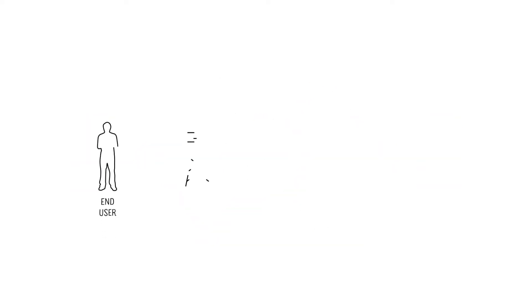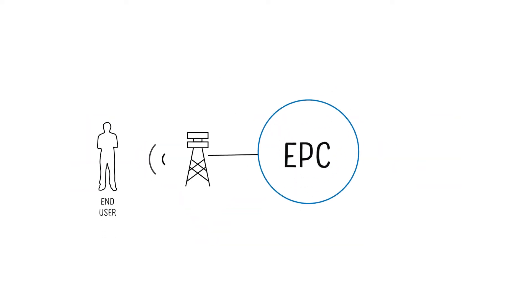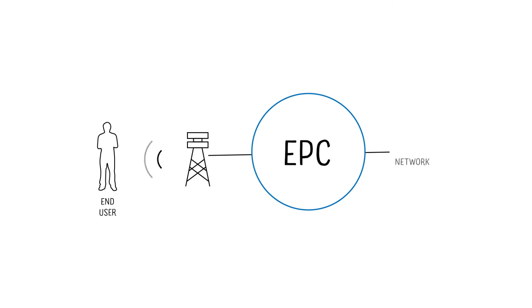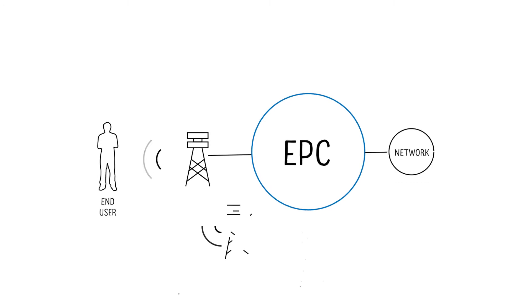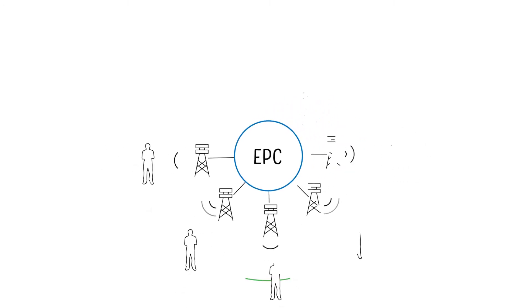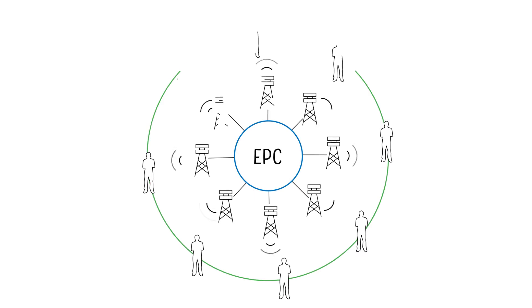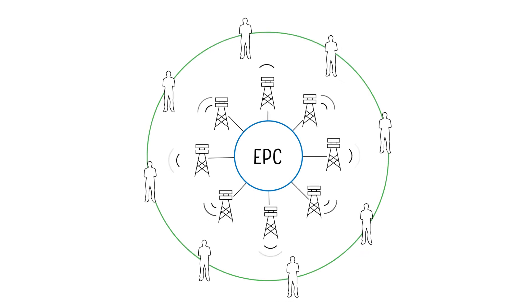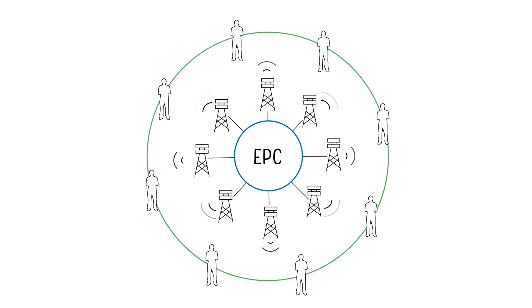The Evolved Packet Core comprises a series of modules between the cell tower and the general network that make sure the user can access the network from anywhere and maintain the expected services.